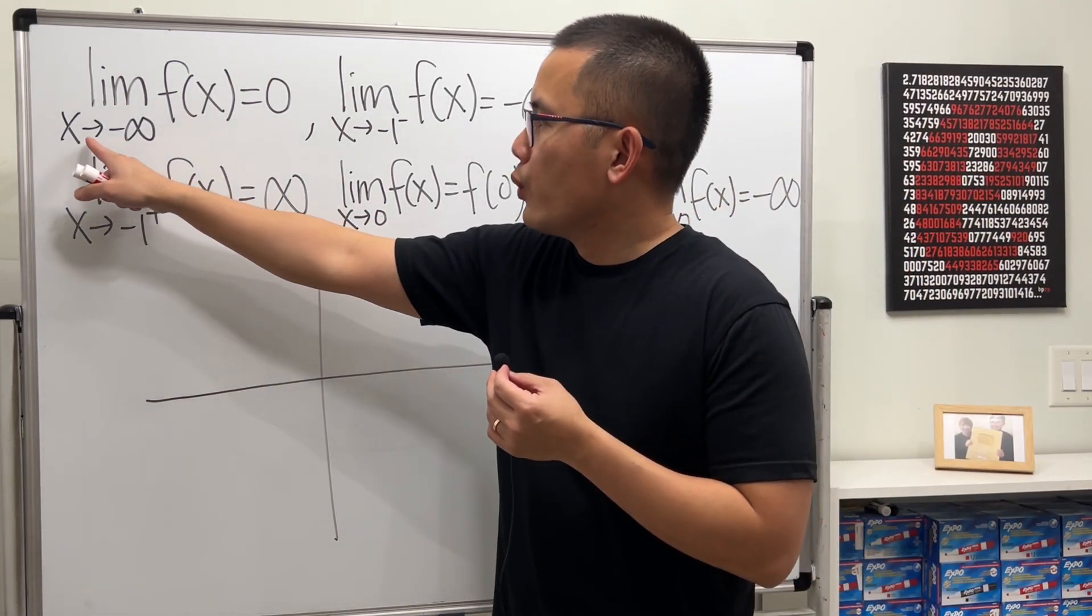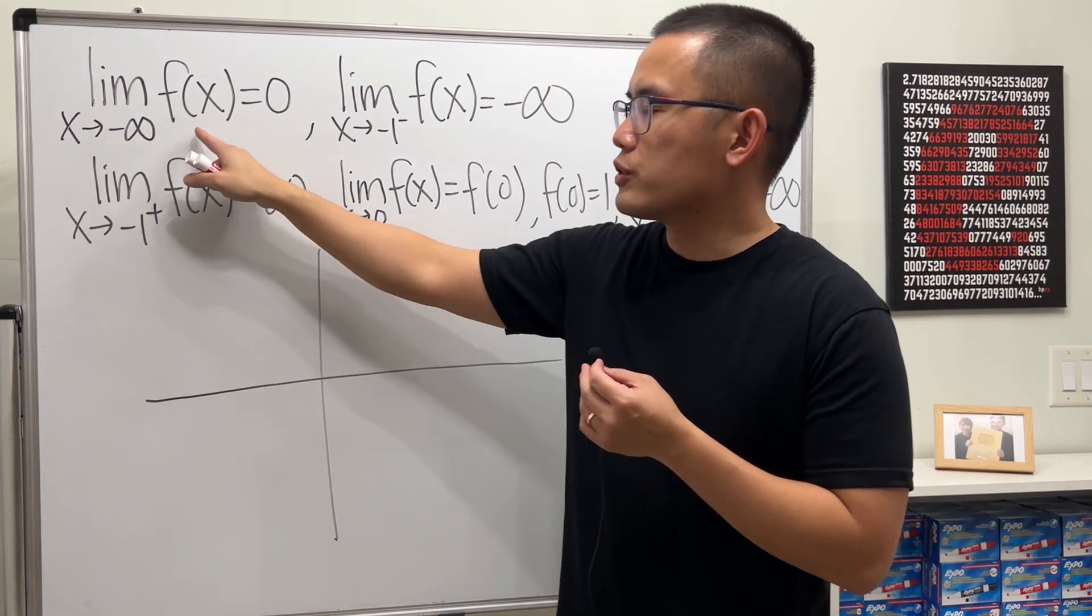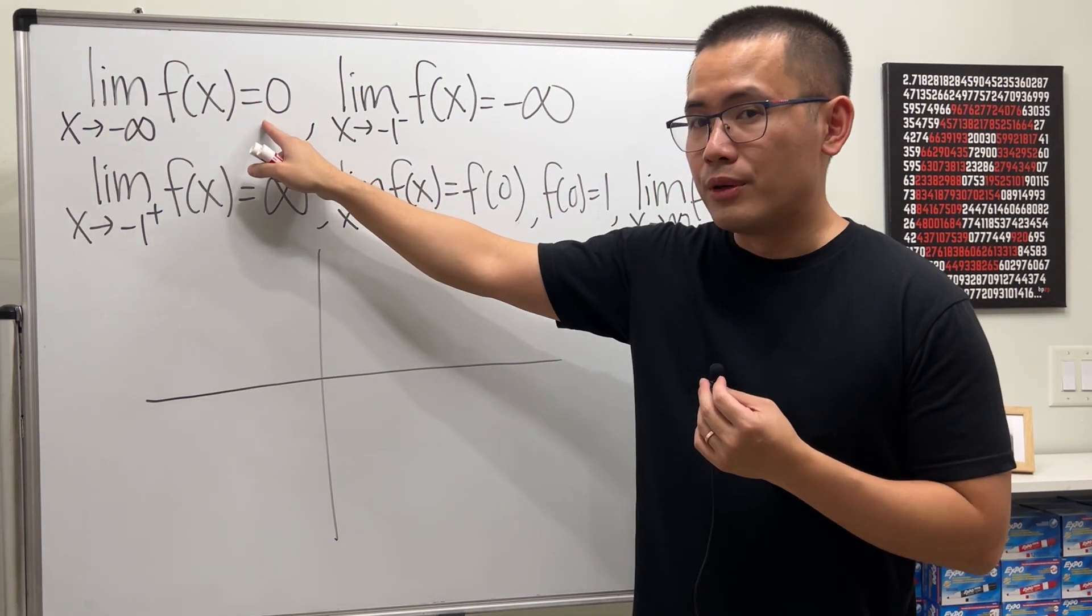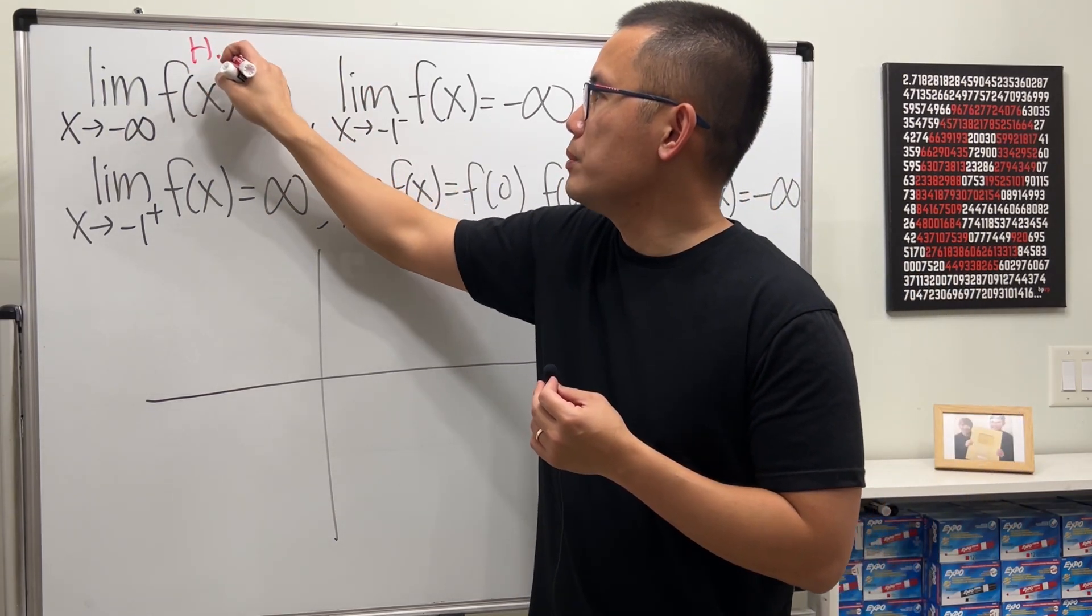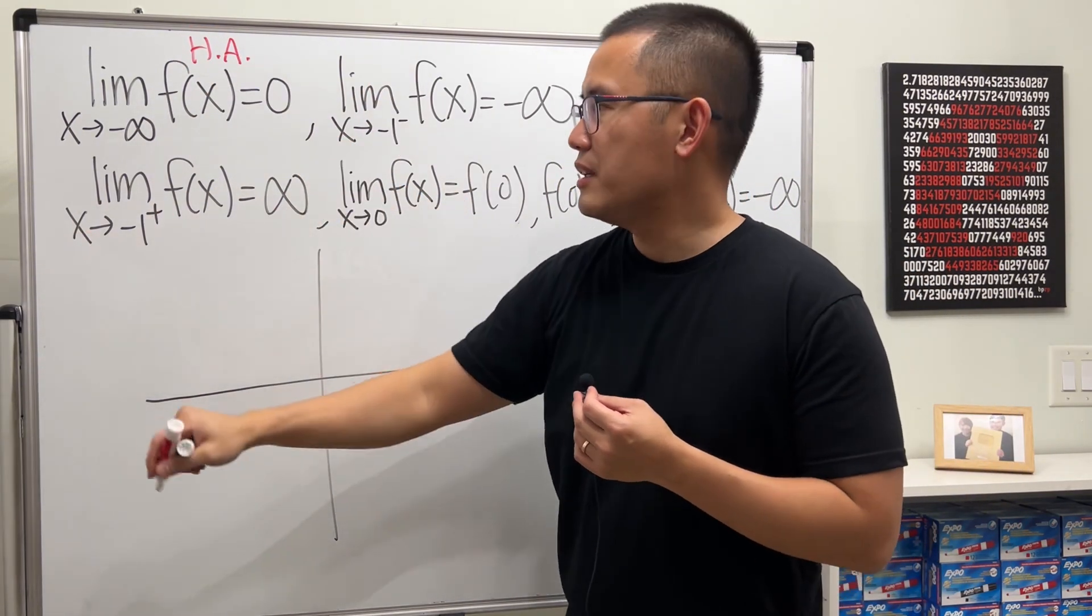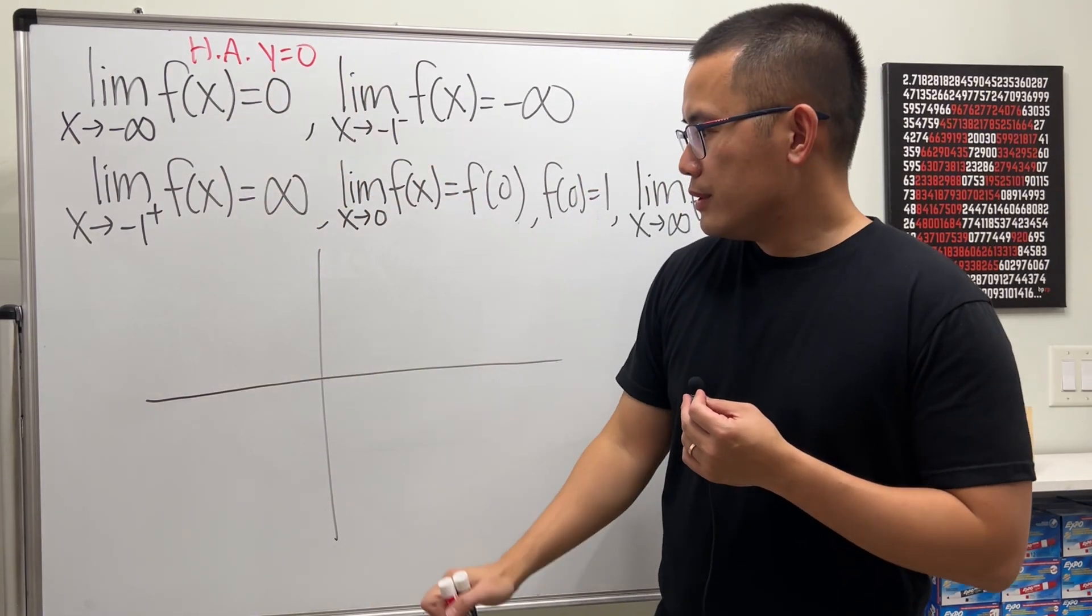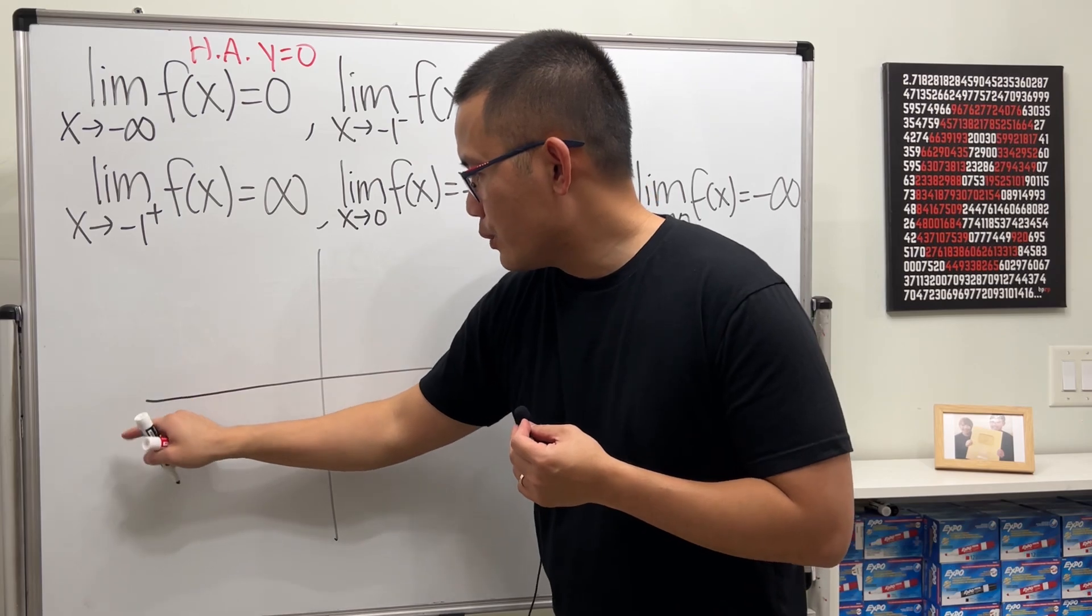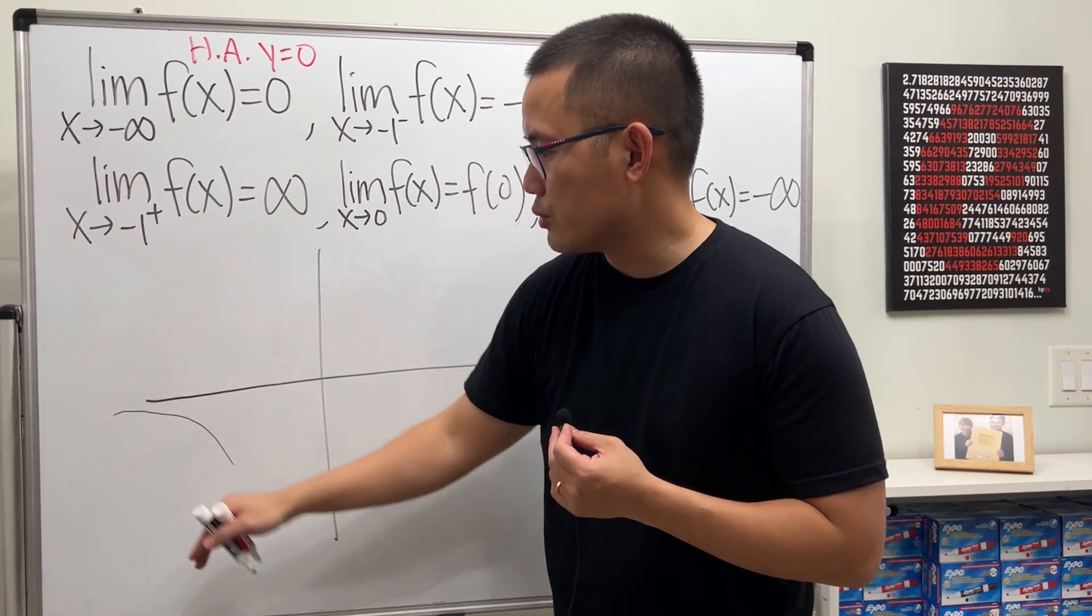Firstly, we have the limit as x approaching negative infinity of the function. This is the finite number, 0. So that means we have a horizontal asymptote on the left-hand side here. Horizontal asymptote at y equal to 0. So no matter what you do, maybe you want to put something down like this. That's okay, because it's a horizontal asymptote. It's approaching 0. This is fine.